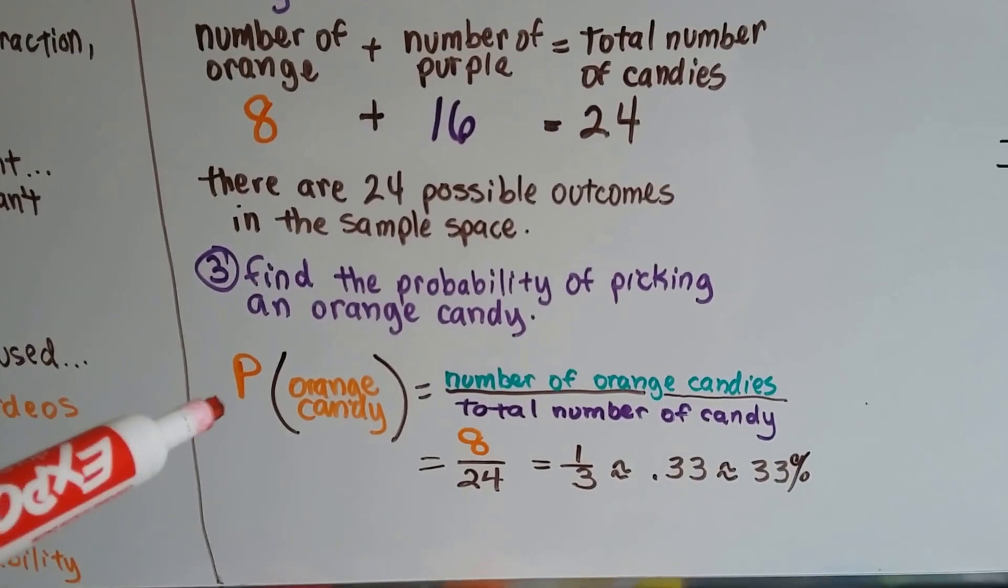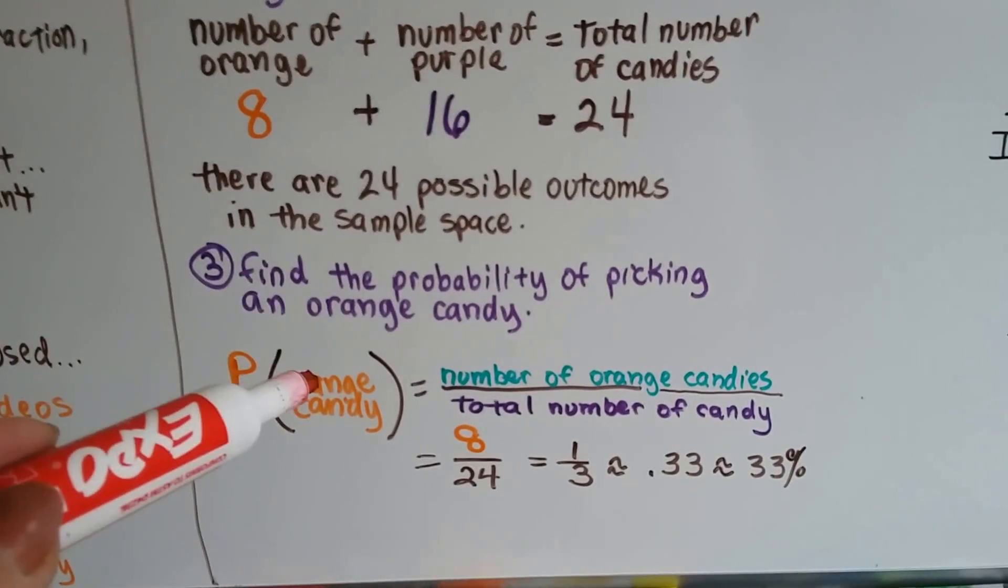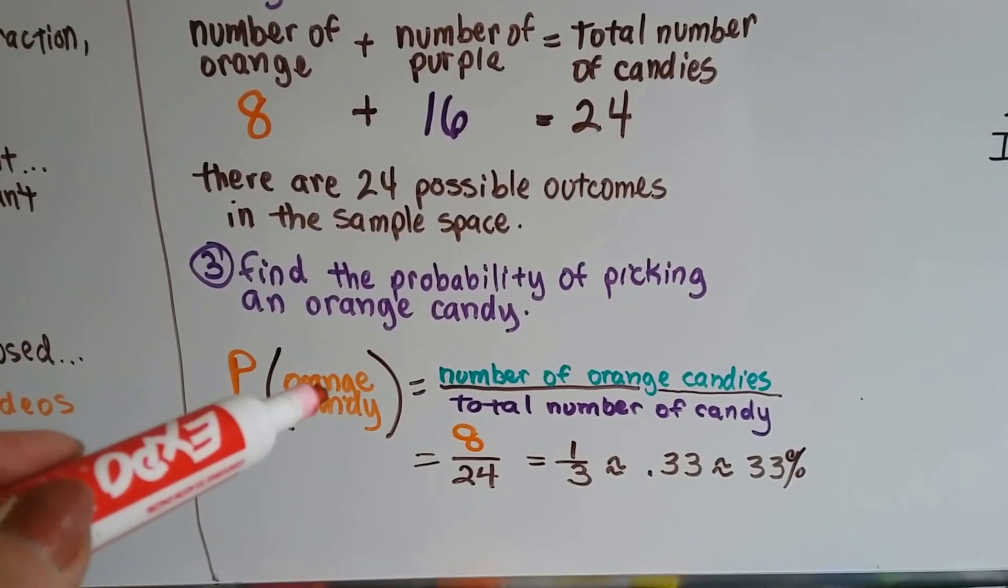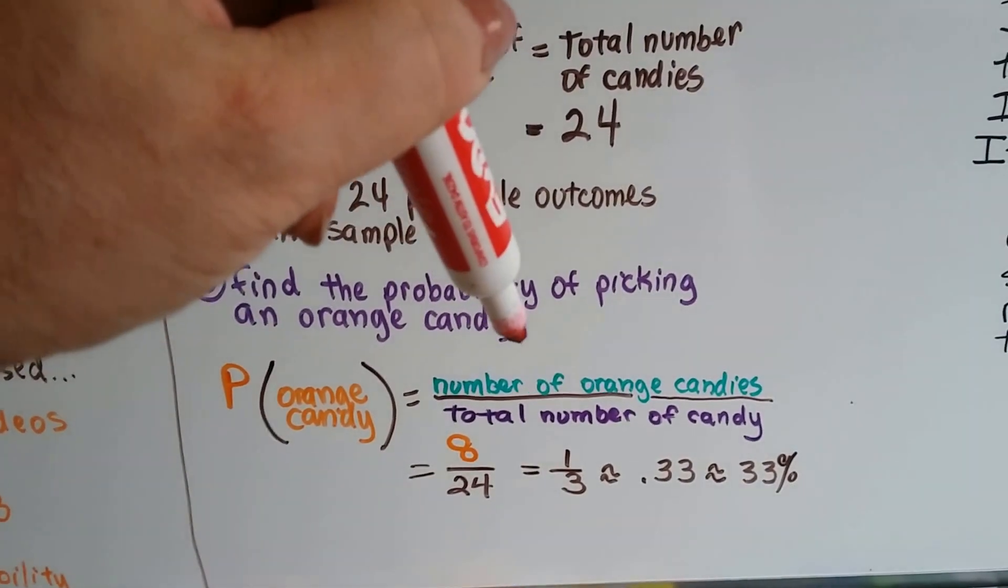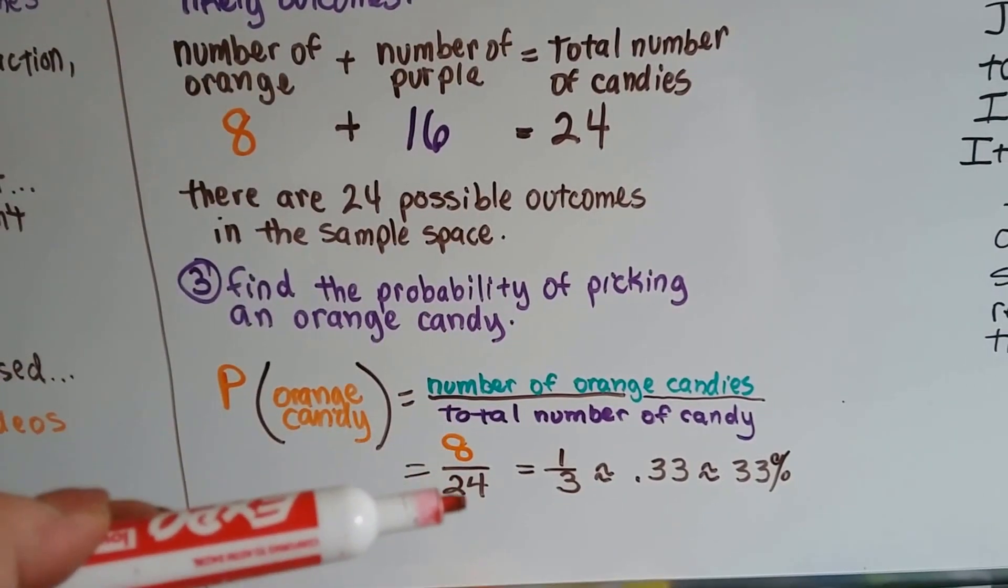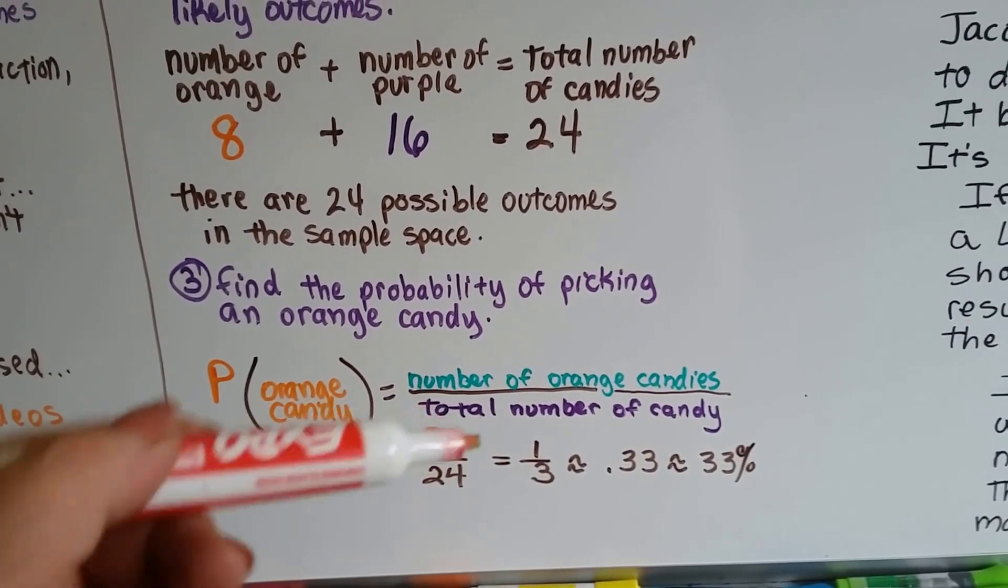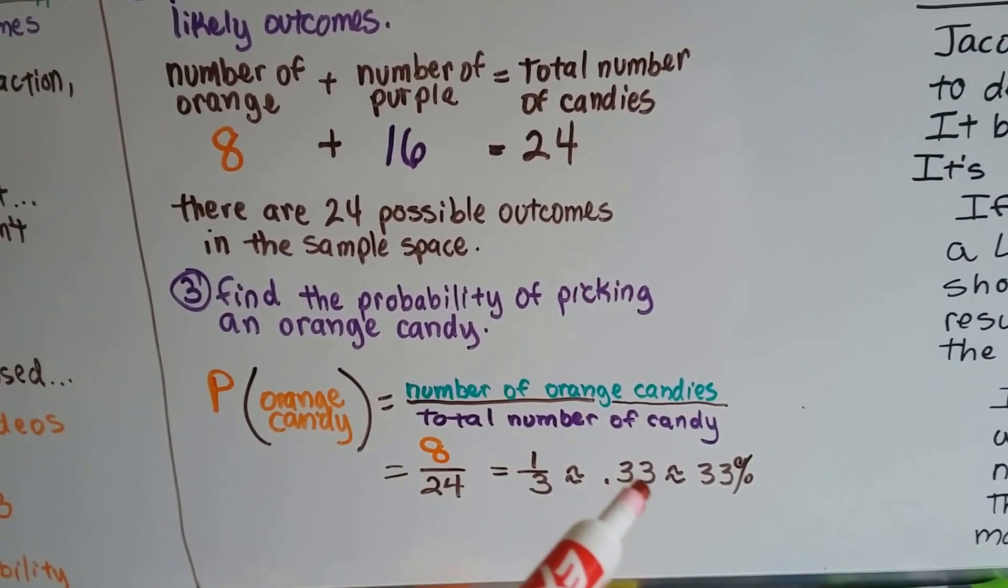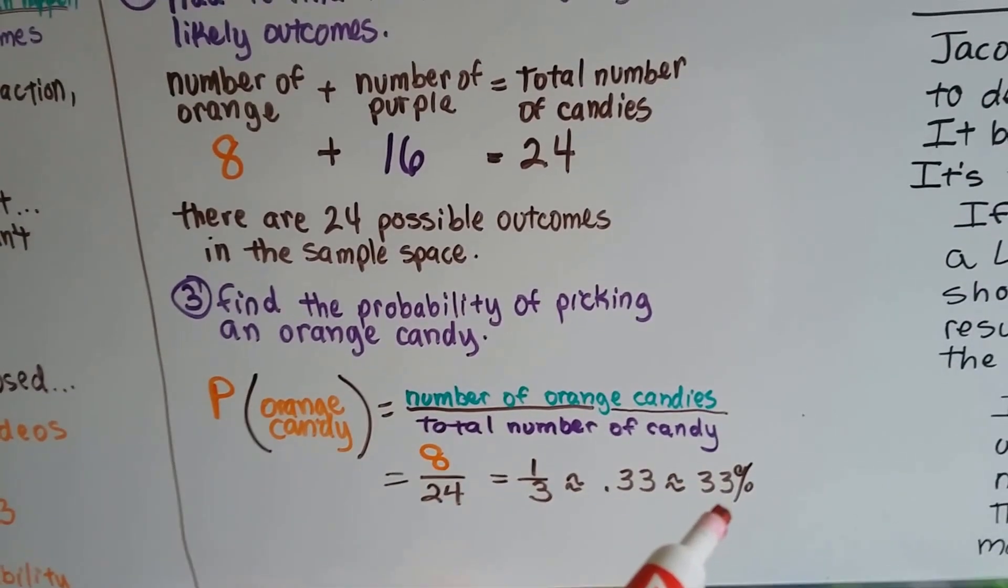We find the probability of picking an orange candy. P orange candy means probability of getting an orange candy. It's the number of orange candies over the total number of candy. There's 8 orange candies out of 24. That's one-third, so it's approximately 0.33 or approximately 33%.